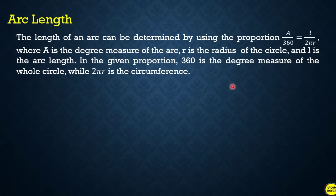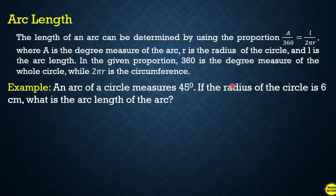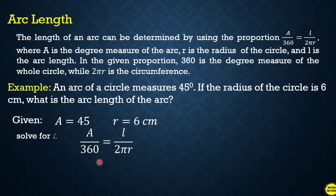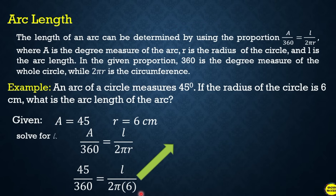For example: an arc of a circle measures 45°. If the radius is 6 cm, what is the arc length? Using the proportion: a/360 = l/(2πr), substitute a = 45 and r = 6. So 45/360 = l/(2π×6), which simplifies to 1/8 = l/(12π).